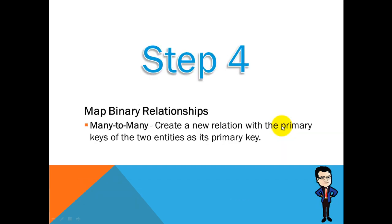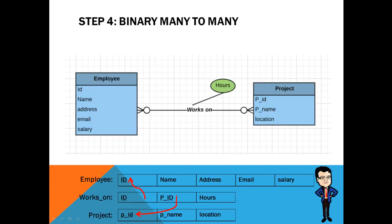Step four: map binary many-to-many relationships. Create a link table with the primary keys of the two entities as its composite primary key. For example, the employee and project entities have a many-to-many relationship named 'works on', so we create a link table named 'works on' and add the primary key of both entities as a composite key.